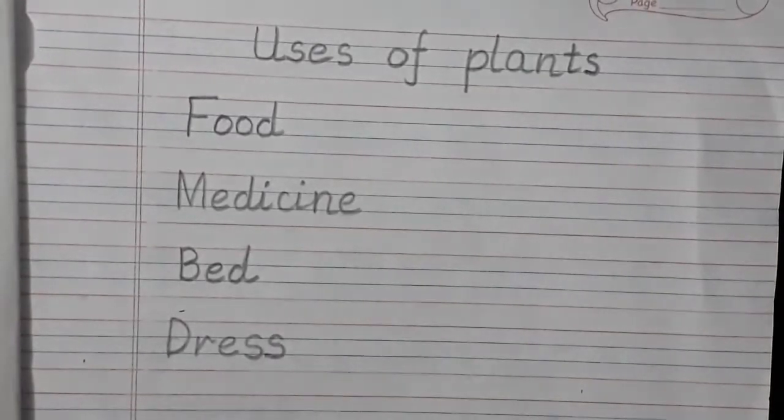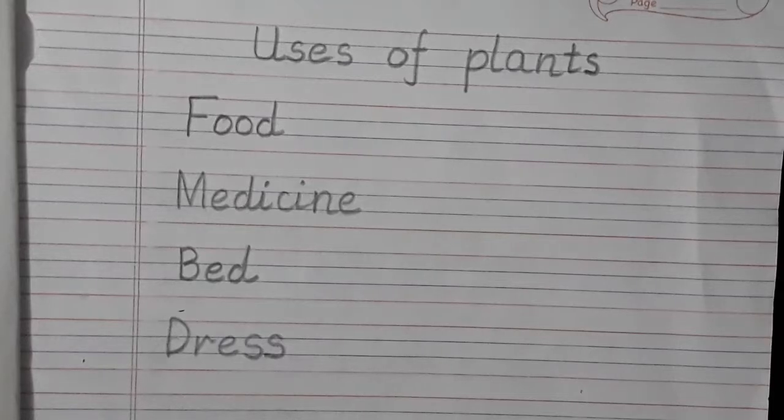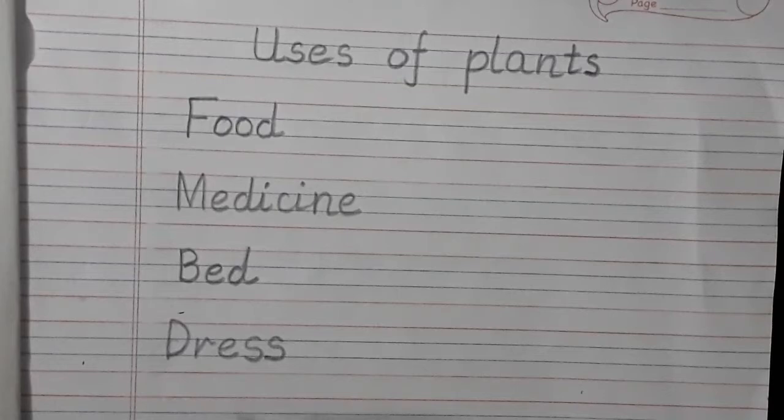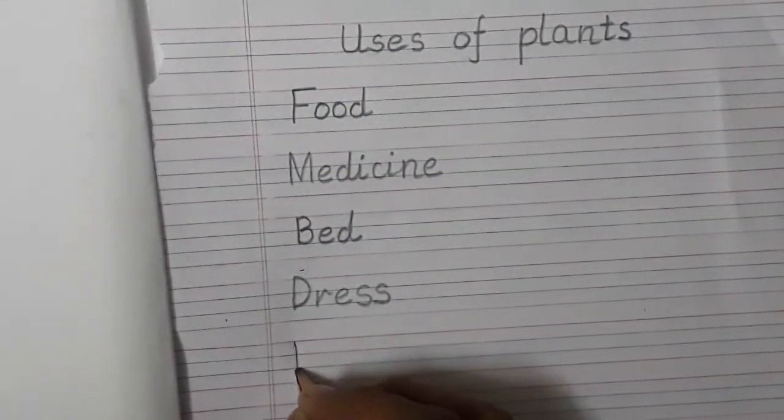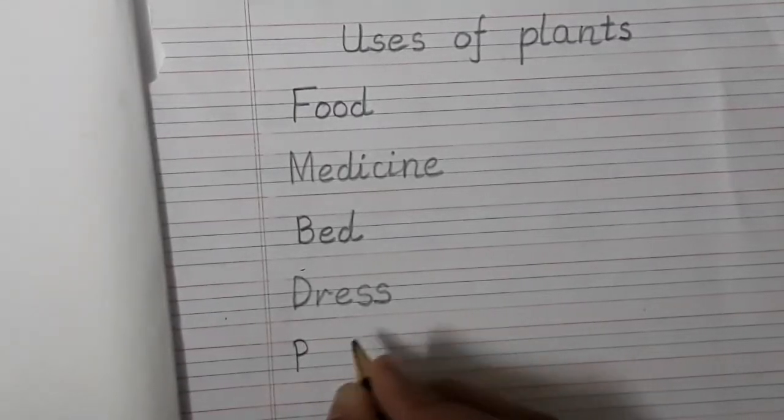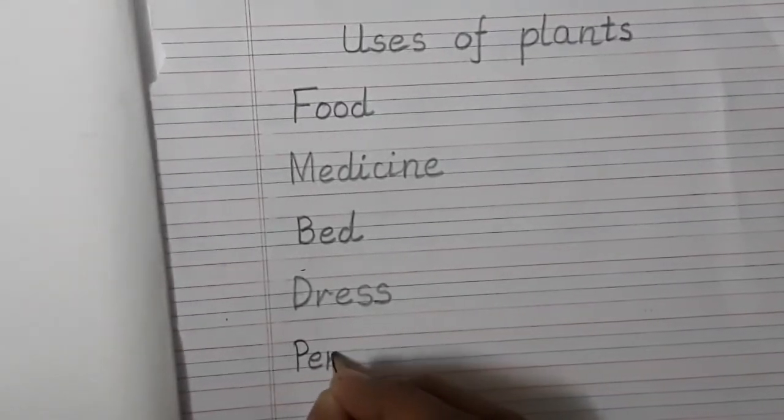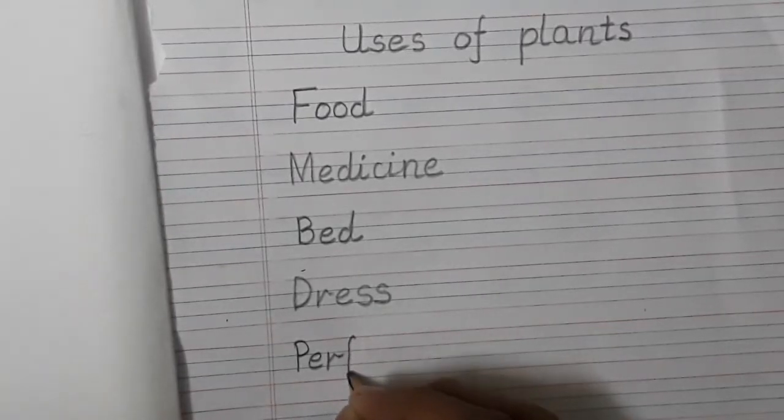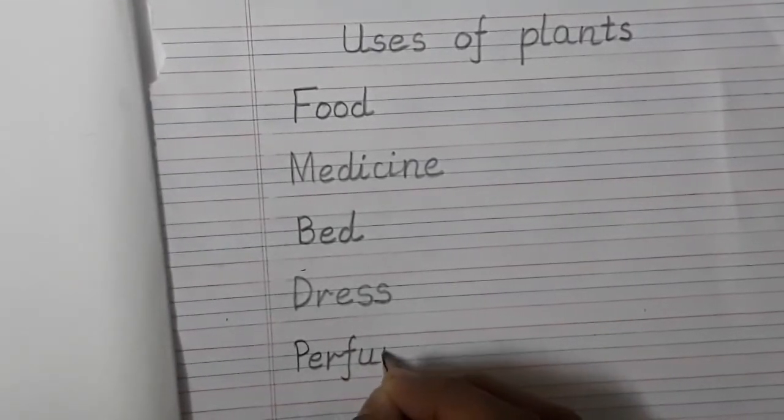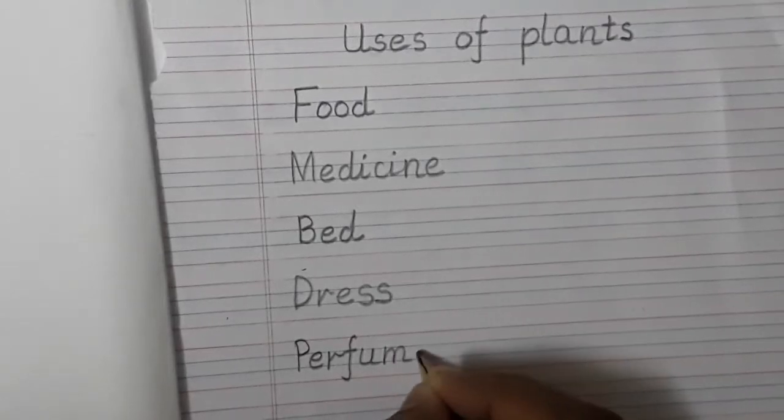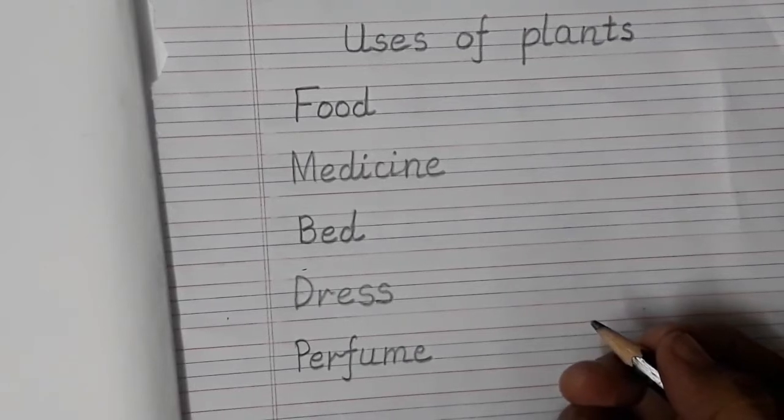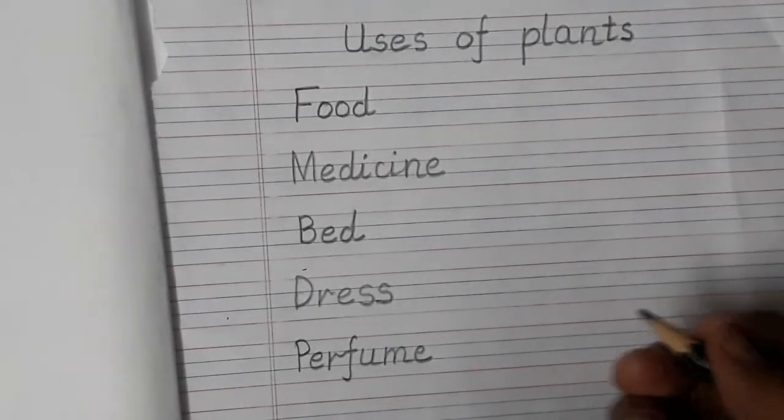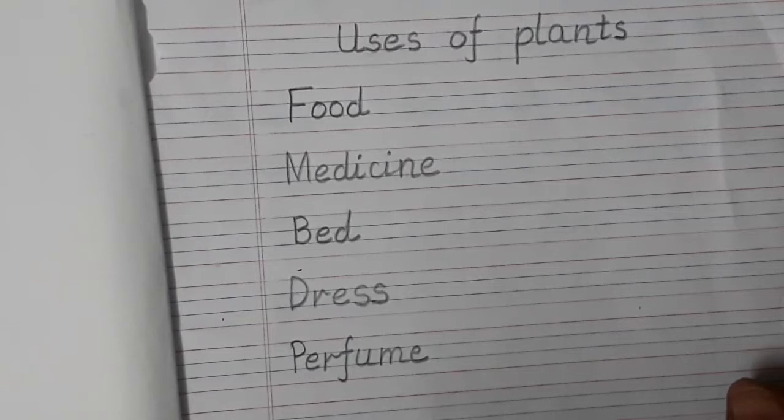Now children, we get perfume also from flowers of few plants like roses and jasmine, et cetera. So let's write P-E-R-F-U-M-E perfume. So this way we are going to write uses of plants in our EVS notebook. I hope you will write with beautiful and nice handwriting.